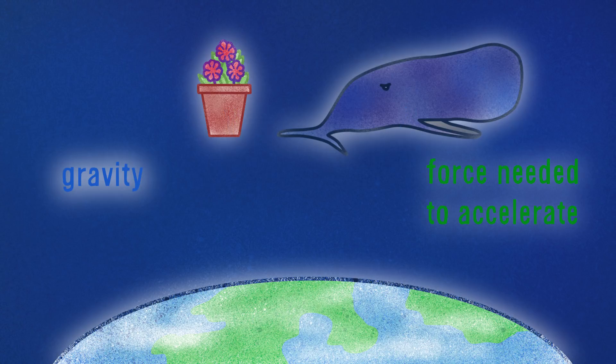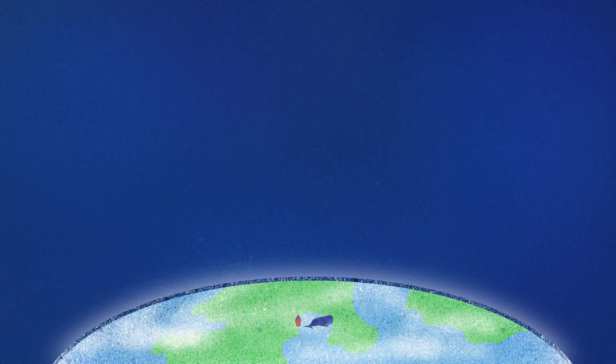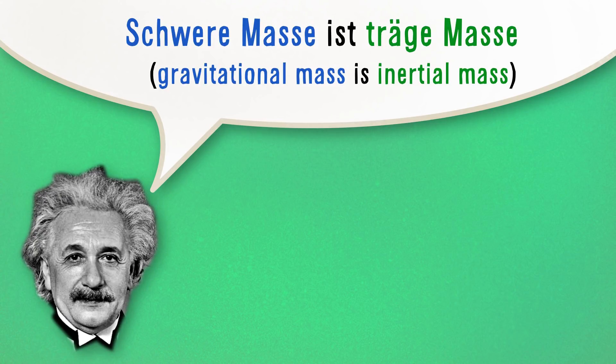So when falling, a heavy object like a whale accelerates in exactly the same way as a light object like a bowl of petunias. In the words of Einstein, gravitational mass is inertial mass. In his general relativity, since all objects fall exactly the same way, gravity is geometry rather than forces.